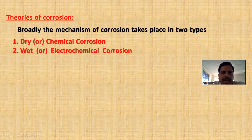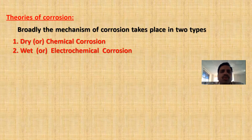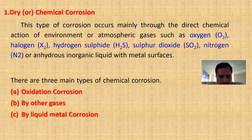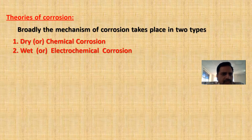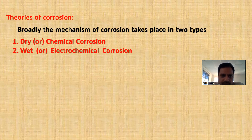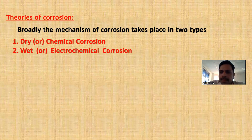First we have to study the mechanism of corrosion and what are the types of corrosion. Broadly, the mechanism of corrosion takes place in two types: dry corrosion or wet corrosion. Dry corrosion means corrosion which takes place in the absence of moisture. Wet corrosion means corrosion that takes place in the presence of moisture.